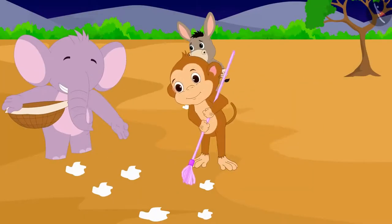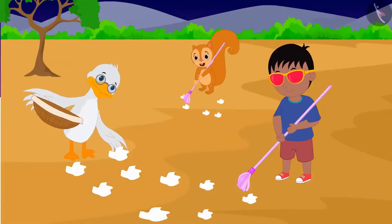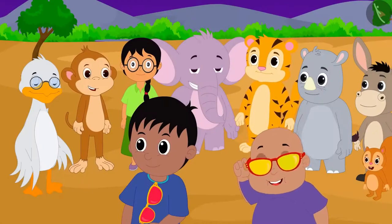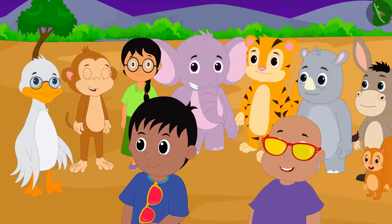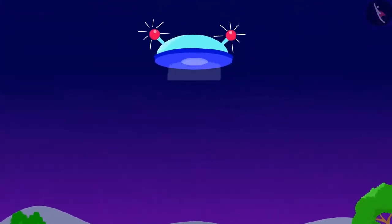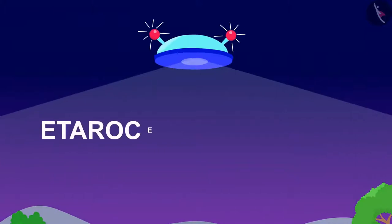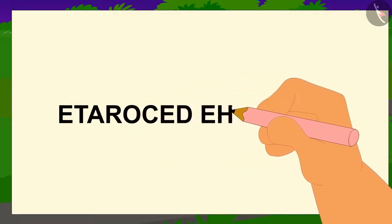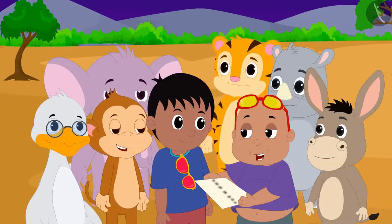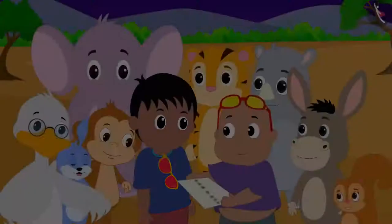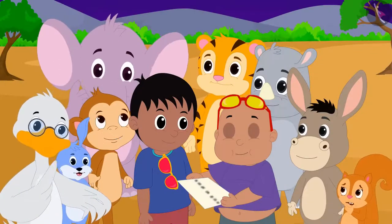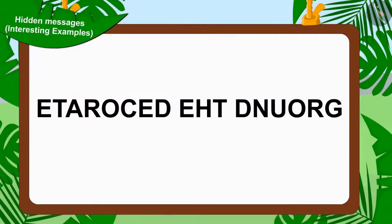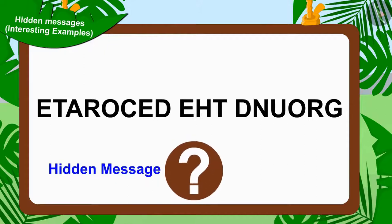All the villagers together cleared the garbage scattered on the ground. Now, Bablu looked at the sky with his unique glasses and saw the next hidden message there. Bablu immediately wrote this message on paper and read it to all the villagers. All the villagers once again started solving Jeev's hidden message. Children, can you solve this hidden message?